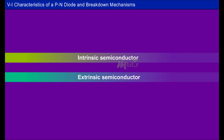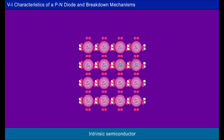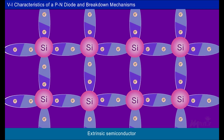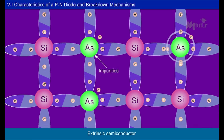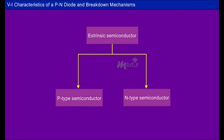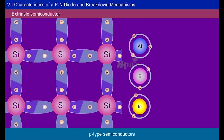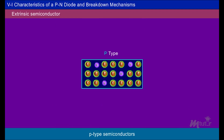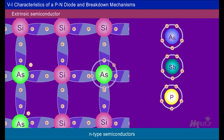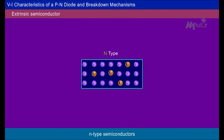Before heading to the topic, let us discuss the overview of intrinsic and extrinsic semiconductors. Intrinsic semiconductors are pure semiconductors where concentration of electrons and holes are equal. In extrinsic semiconductors, impurities are added — called doping — to increase the conductivity. Extrinsic semiconductors can be divided into two types: P-type, formed by doping group three elements where majority carriers are holes, and N-type, formed by doping group five elements where majority carriers are electrons.